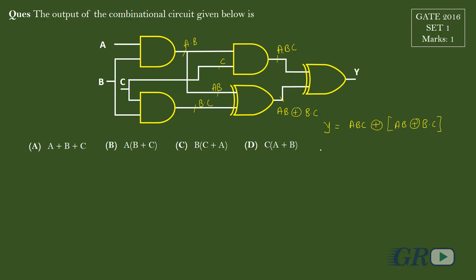So one way we can approach this question is suppose I put C equals to zero. If I put C equals to zero here, here I will get zero, the output here will be zero, here we will get zero, and here we will get A dot B. So A dot B XOR with zero, again we will get A dot B, and A dot B XOR with zero, then Y will be A dot B. So with C equals to zero, Y will be A dot B.